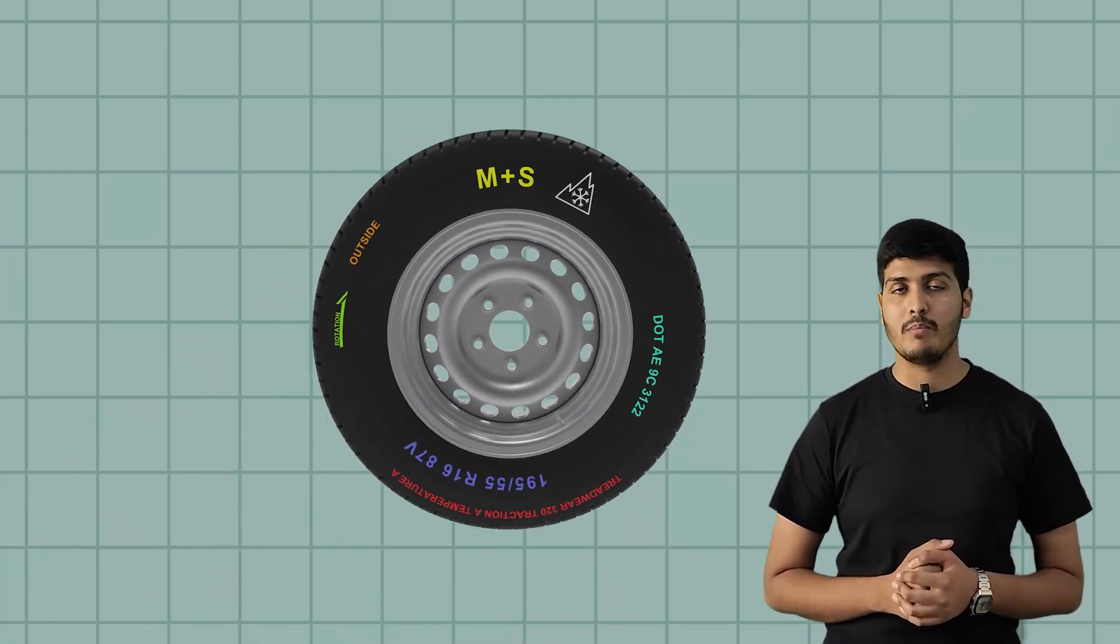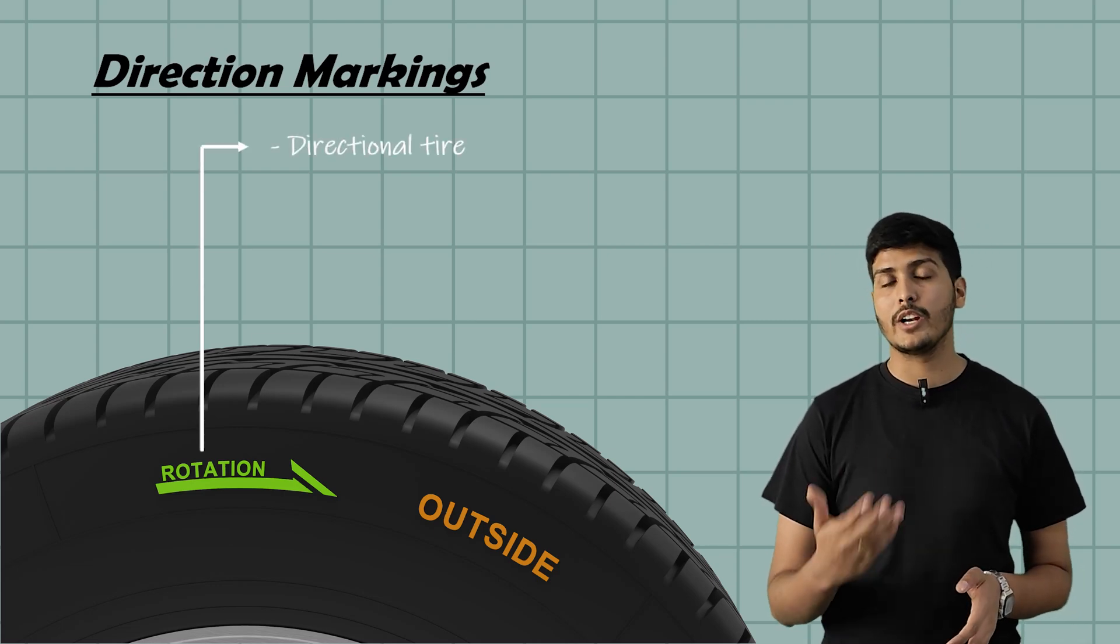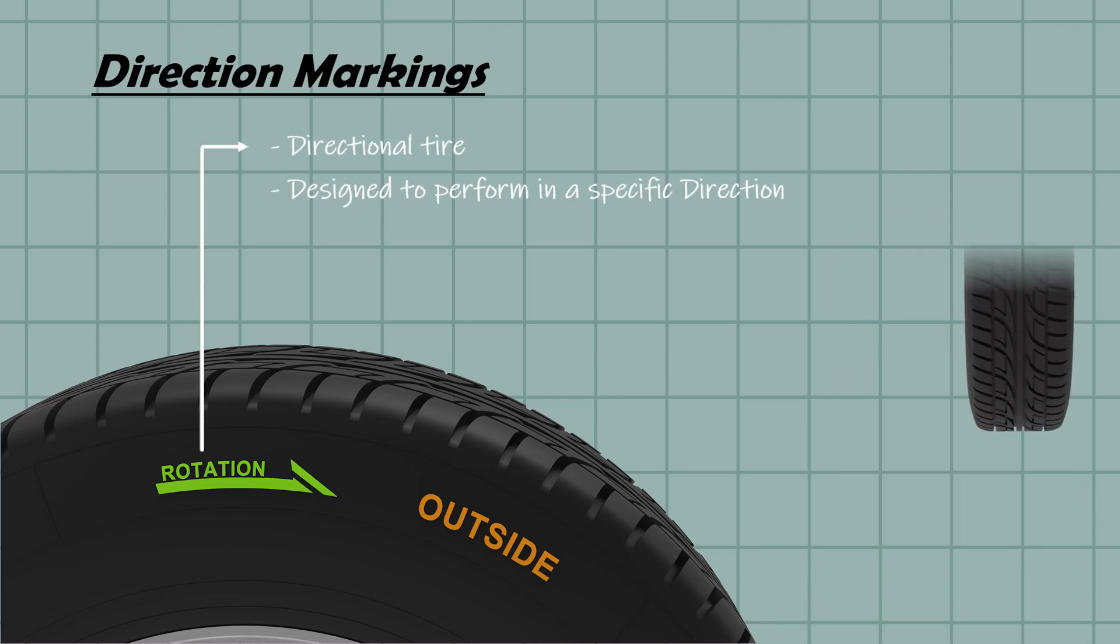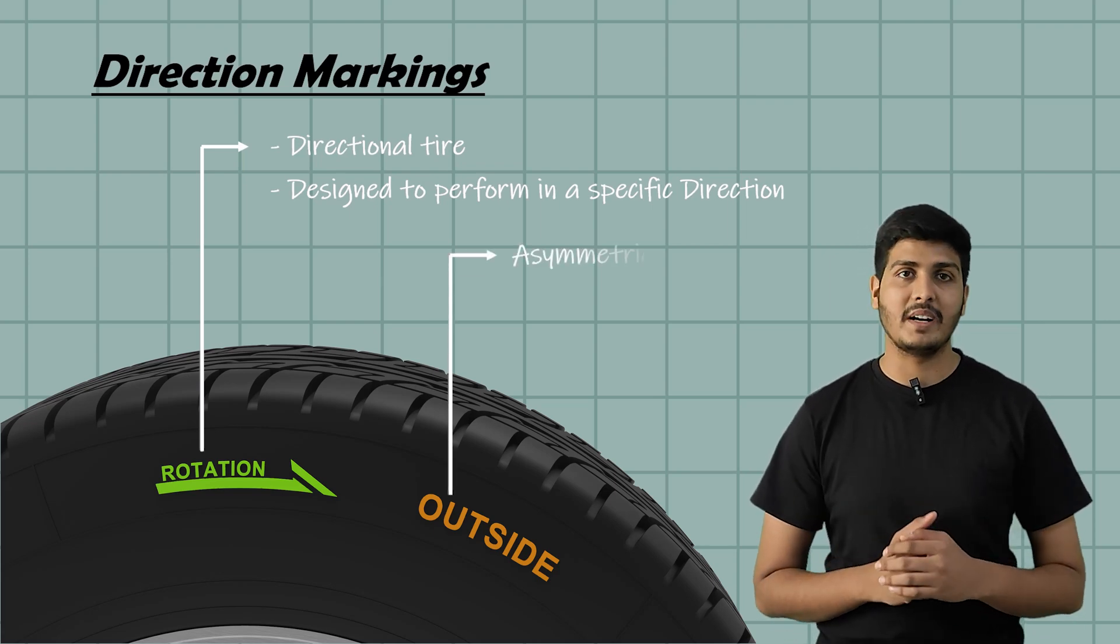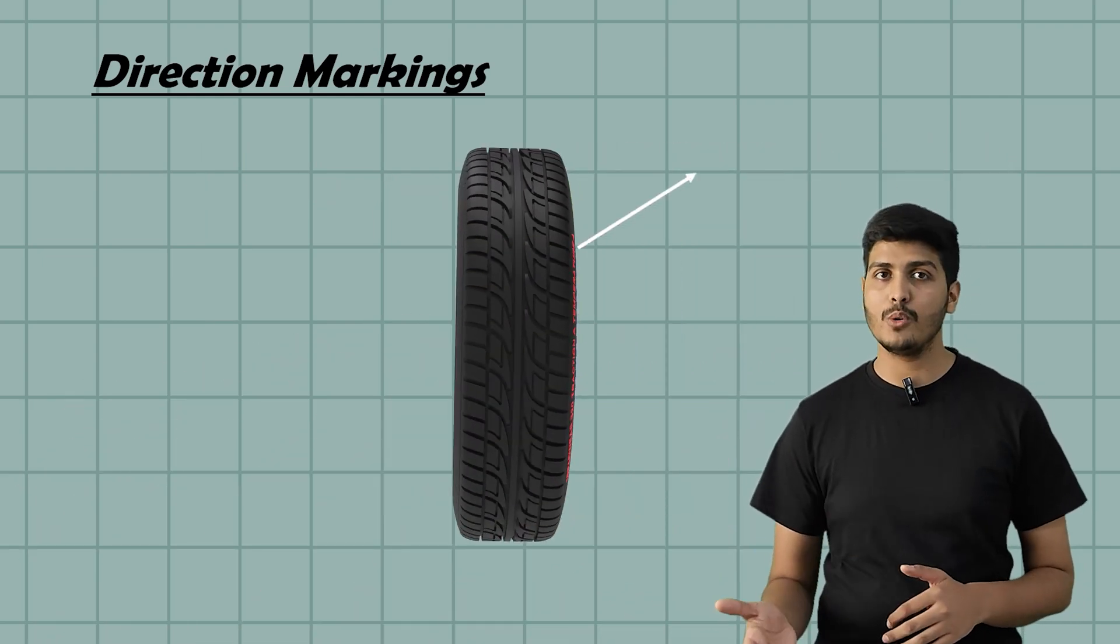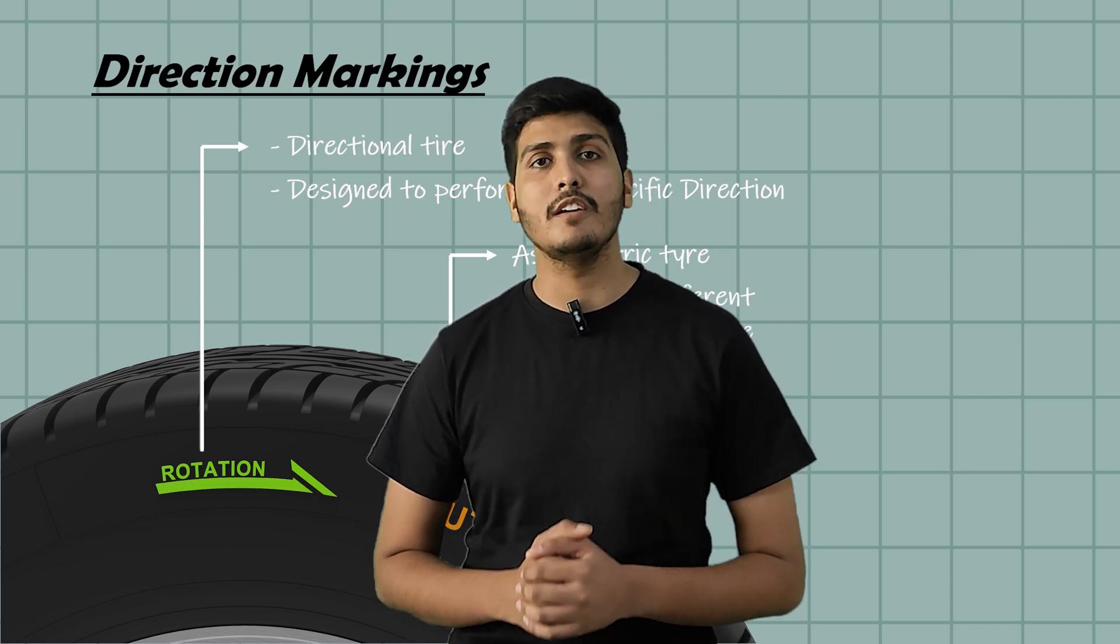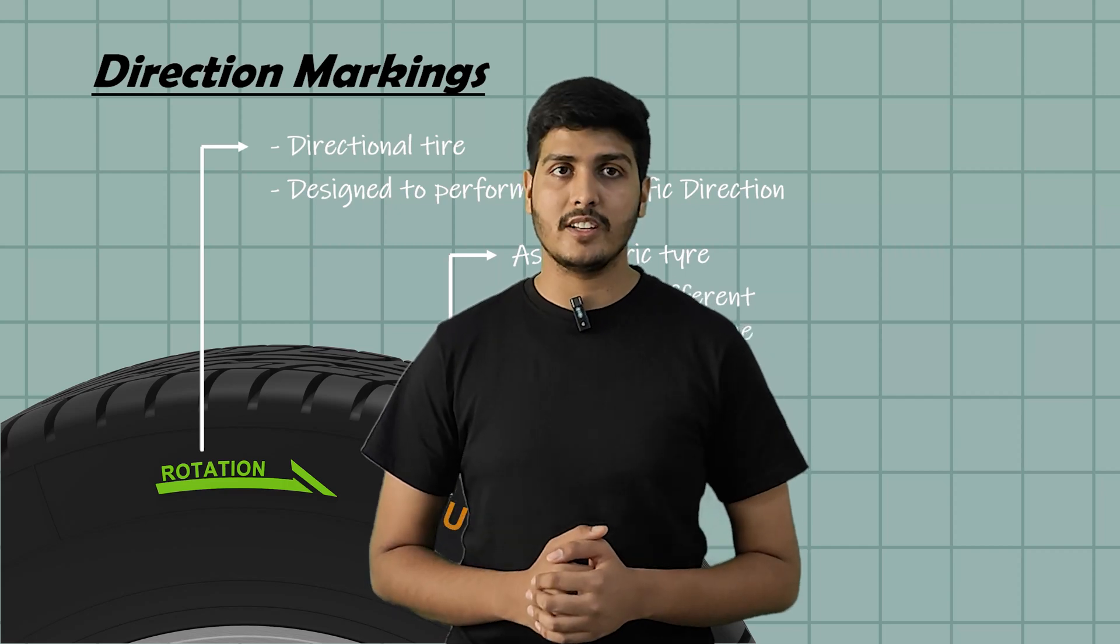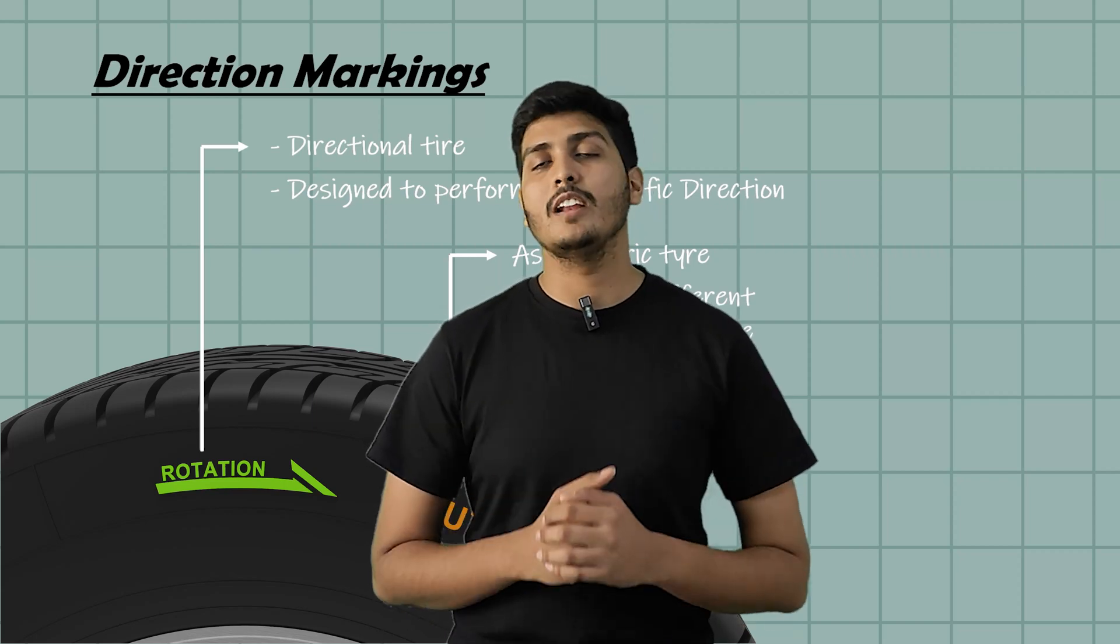Now here is something which most people miss. A little arrow or the word outside written on the tire. And trust me it's not for the design it's there for a reason. If you see a rotation arrow that means the tire is directional. It is designed to rotate in a specific direction because in the specific direction the tread pattern is made to push the water out better and give you more grip especially at higher speed or in wet conditions. Now if it says outside that means it's an asymmetric tire. These tires have different tread designs on inside and outside. So the side marked outside should always face outward when the tire is mounted. Mounting your tire in the wrong way can mess your car handling, braking and drainage system even if the tire itself is brand new. So before you get your new tire installed just check for that arrow or outside label and make sure that they are fitted in the right way. It's a small detail but it makes a big difference.